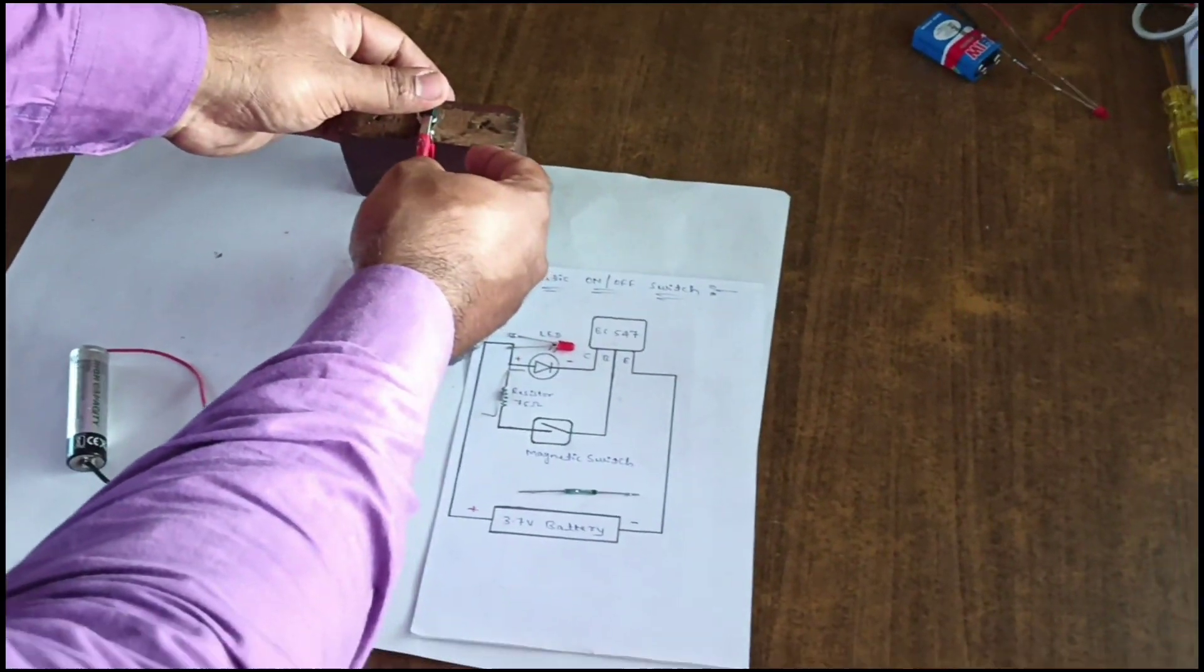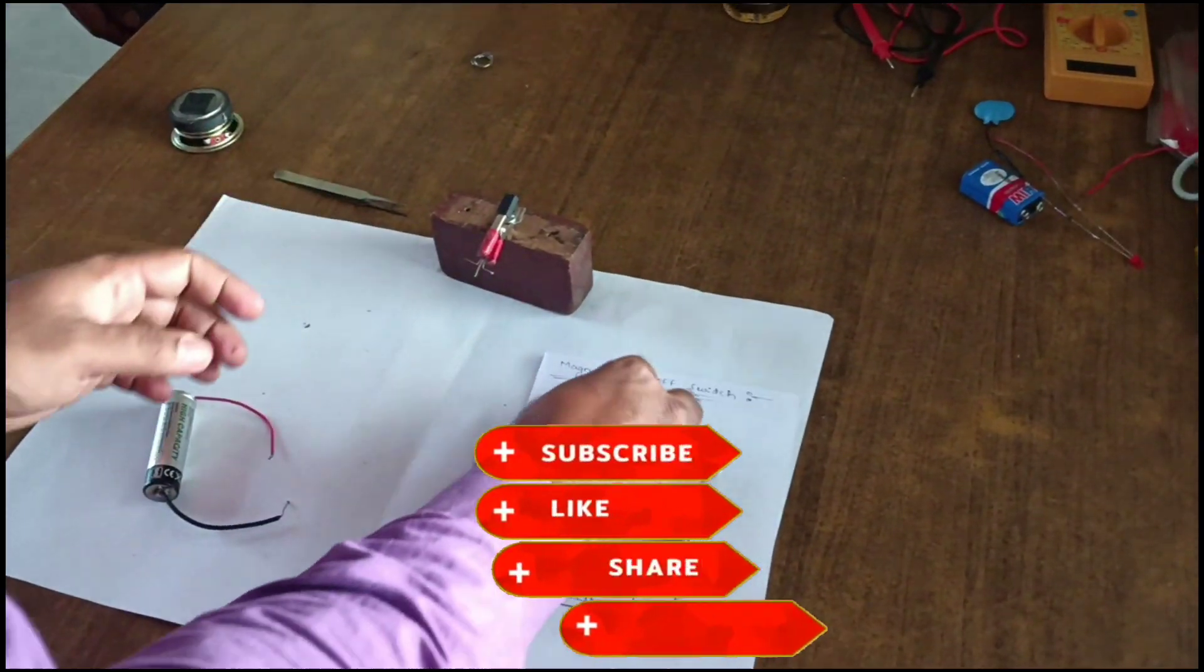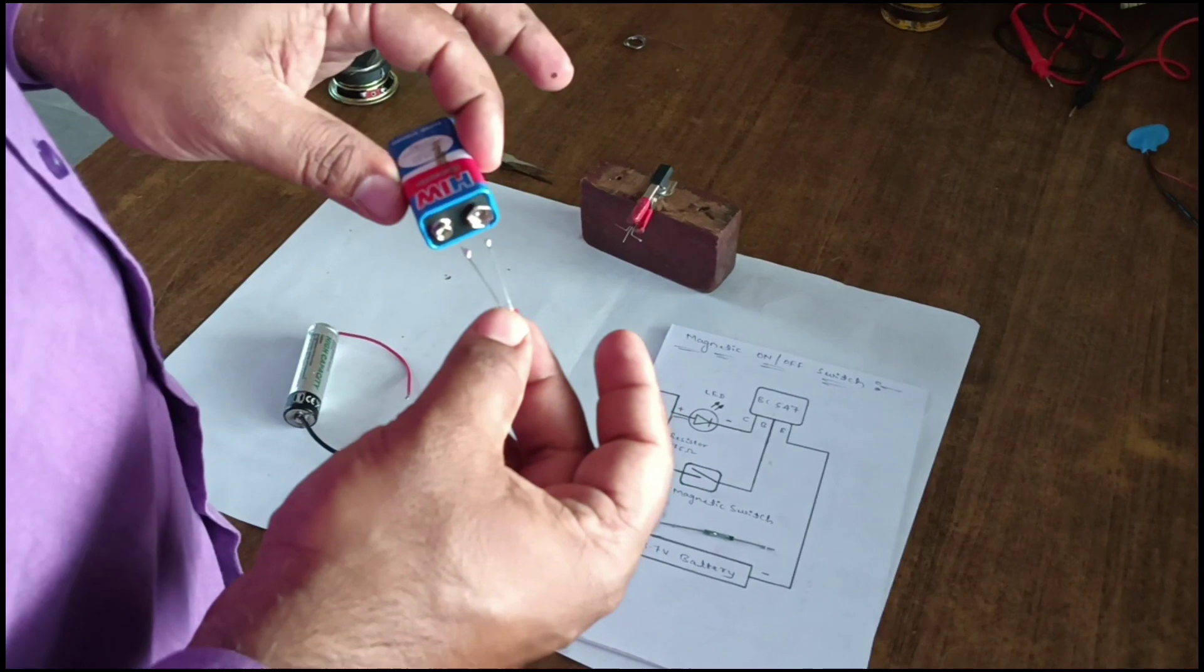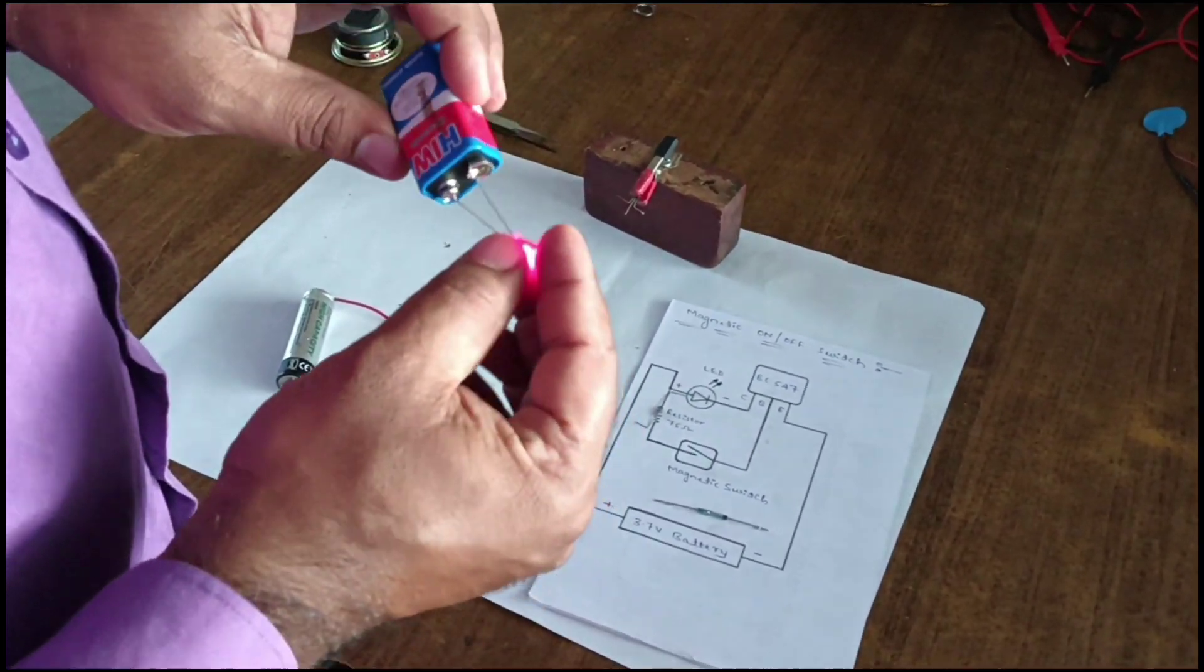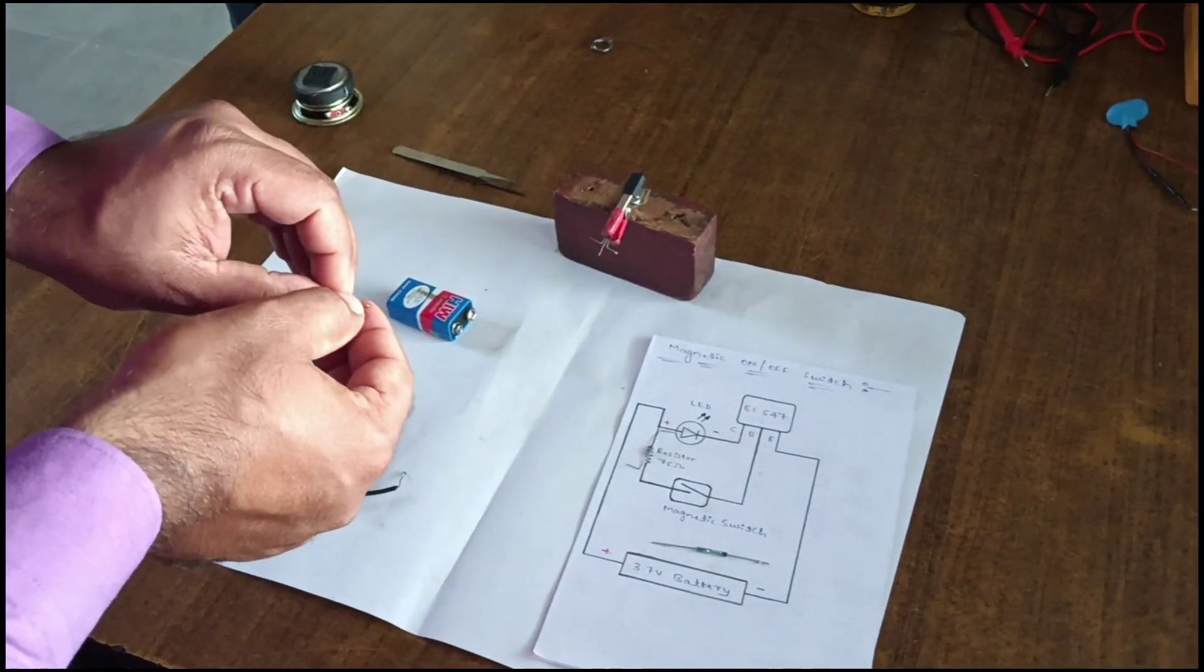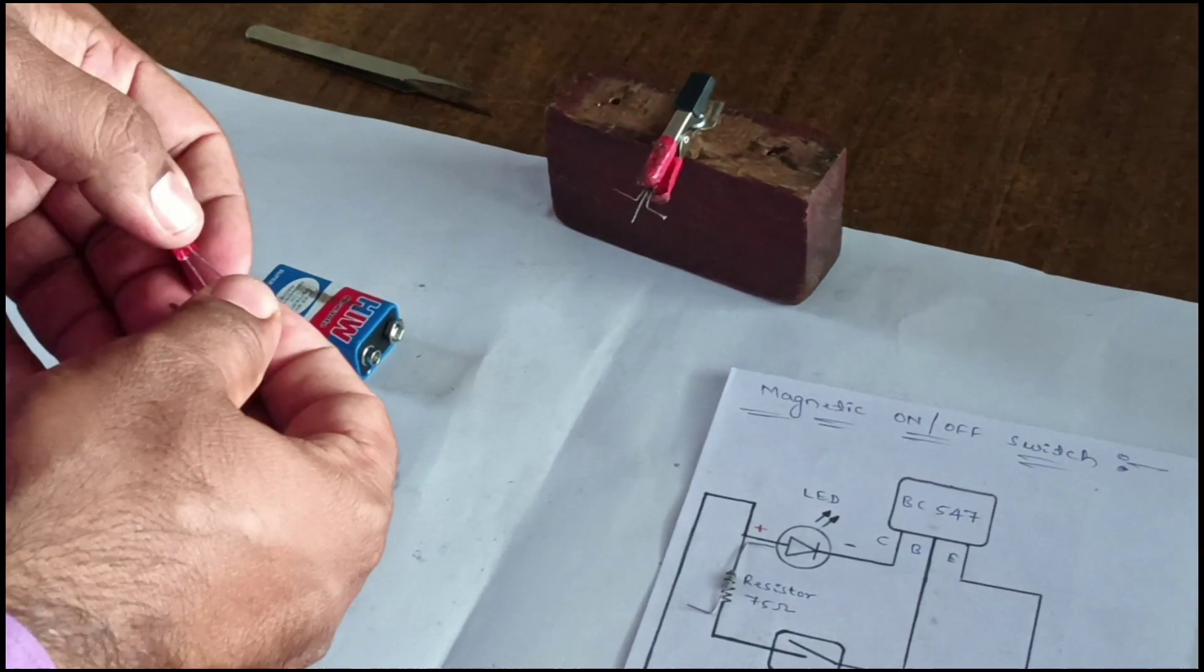Take the BC547 transistor. You can check the positive and negative from this battery. This is the positive terminal, and this is the negative. The negative is connected to the BC547.